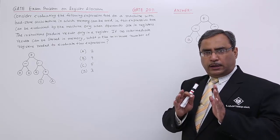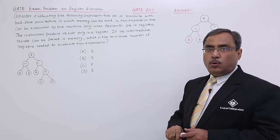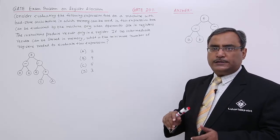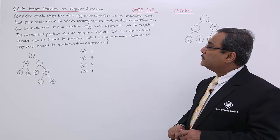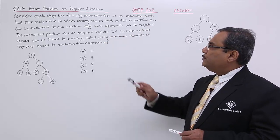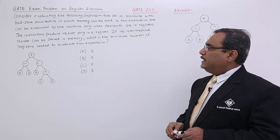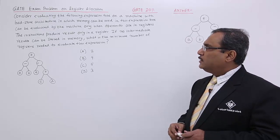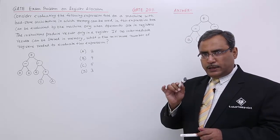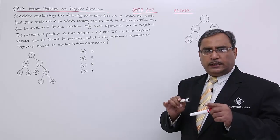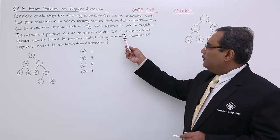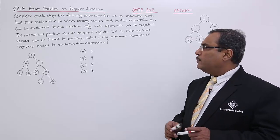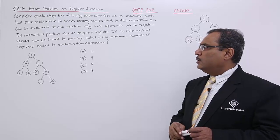The computer architecture is load and store architecture, and in this case the operands on which operations are to be carried out are supposed to be kept in the registers. The instructions produce results only in the registers, meaning the source operands will be in the registers and the result produced will also be saved to the registers. If no intermediate results can be stored in memory, then whatever you are doing has to be kept in the registers, not in the memory. What is the minimum number of registers needed to evaluate this expression?